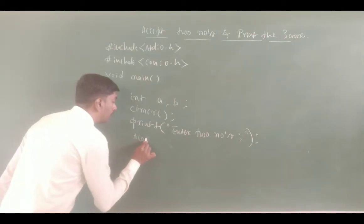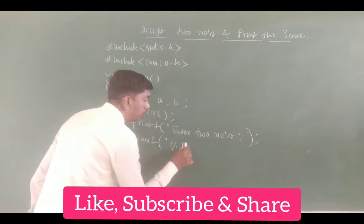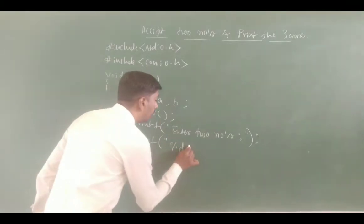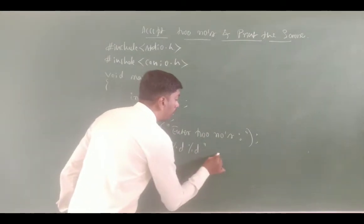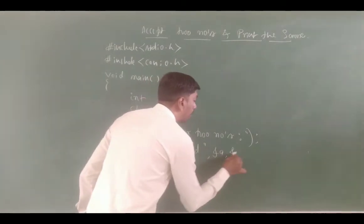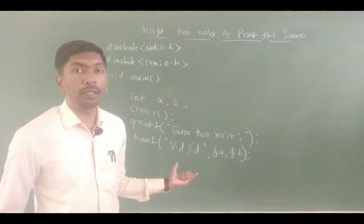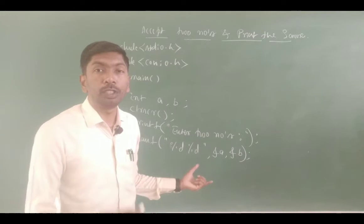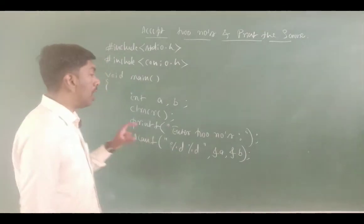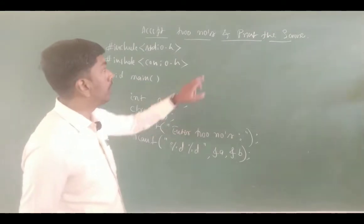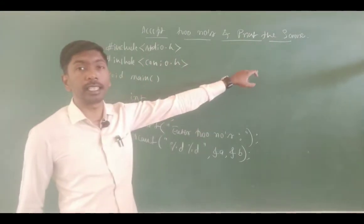We have to use scanf with format specifiers %d and %d, then &a and &b to accept values. The user enters 10 and 20 — 10 will be stored in memory block a and 20 will be stored in memory block b. Our concept is to accept and print the same.